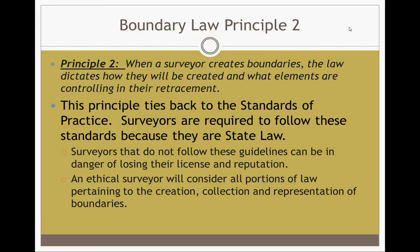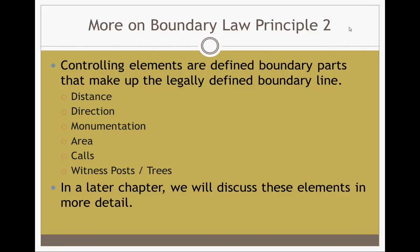Principle two: when a surveyor creates boundaries, the law dictates how they'll be created and what elements are controlling in their retracement. This comes back to the standards of practice. Surveyors are required to follow these standards because they are state law. Surveyors that do not follow these guidelines can be in danger of losing their license and their reputation. Controlling elements are defined boundary parts that make up legally defined boundary lines — distance, direction, monumentation, area, calls, and witness posts and trees.